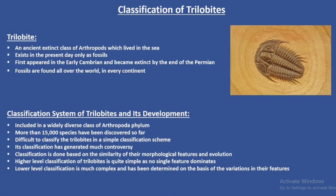The trilobites are an ancient extinct class of arthropods which were all marine. In the present day they exist only as fossils. The trilobites first appeared in the early Cambrian and became extinct by the end of the Permian, and they lived all over the world.